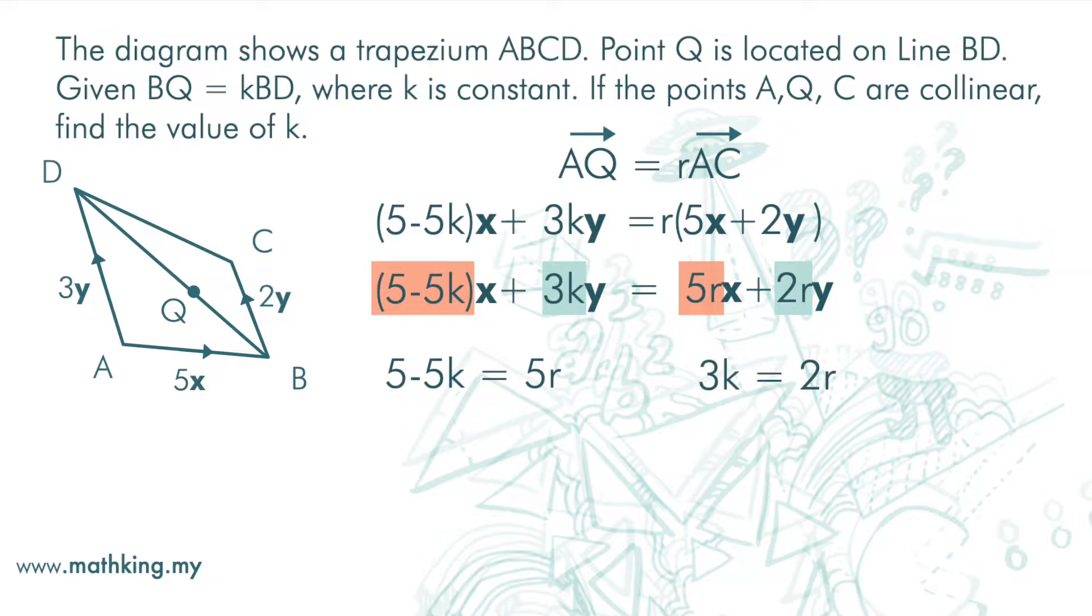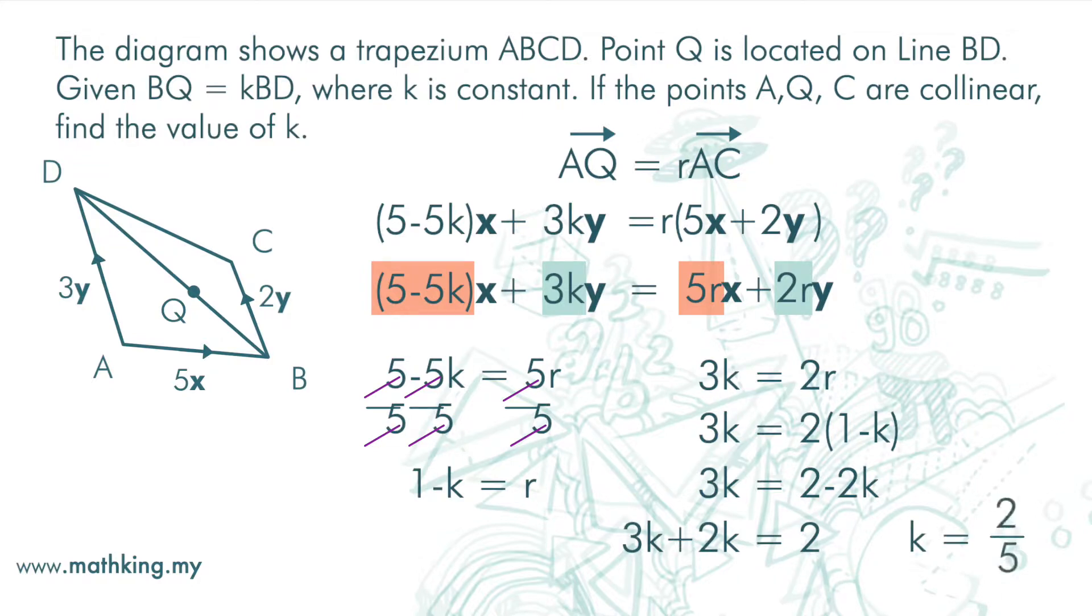We got two equations, so what we need to do now is to solve this simultaneous equation to find K. We divide both sides by 5 and we got 1 minus K equals R. We substitute 1 minus K into R here, expand it, and we get K equals 2 over 5.